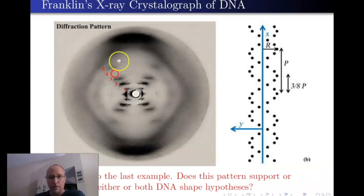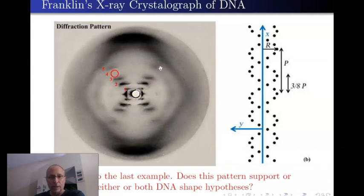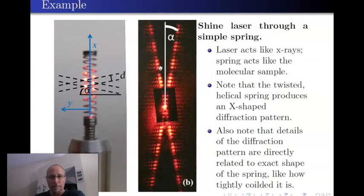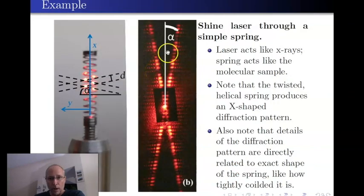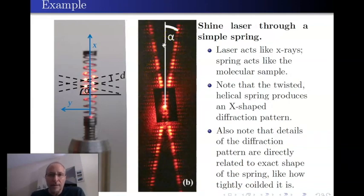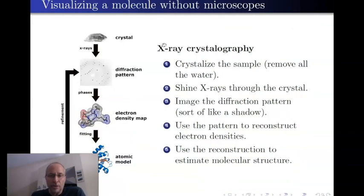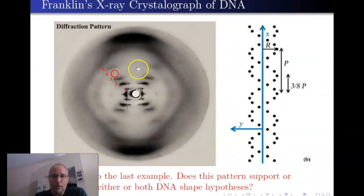Now notice this — look at this picture and look at the pattern. This is the diffraction of X-rays through crystallized DNA. Now compare that to the spring. It forms an X, just like the spring. Notice the X is different — it's a slightly wider angle. But the point is that this picture was definitive.